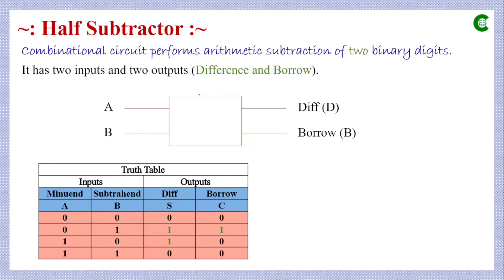If we simplify the columns of difference and borrow using a K-map, the expression for difference is A̅B + AB̅, which is the XOR operation between the two inputs. For borrow, we get A̅B, which is an AND operation between one input and the complemented form of the other.